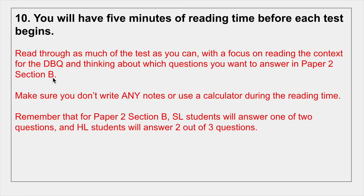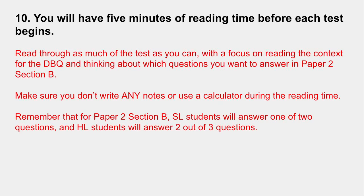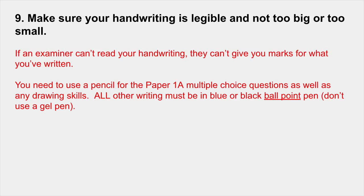If you're doing Paper 2, flip over to Section B, look at those questions, and decide which ones you want to answer. SL students will answer one of the two questions; HL students will answer two out of three questions. Each question has an a, b, and c, so answering 'one question' means answering all three parts — a, b, and c — of that question. No mixing and matching allowed. HL students answer six sub-questions total in Section B.